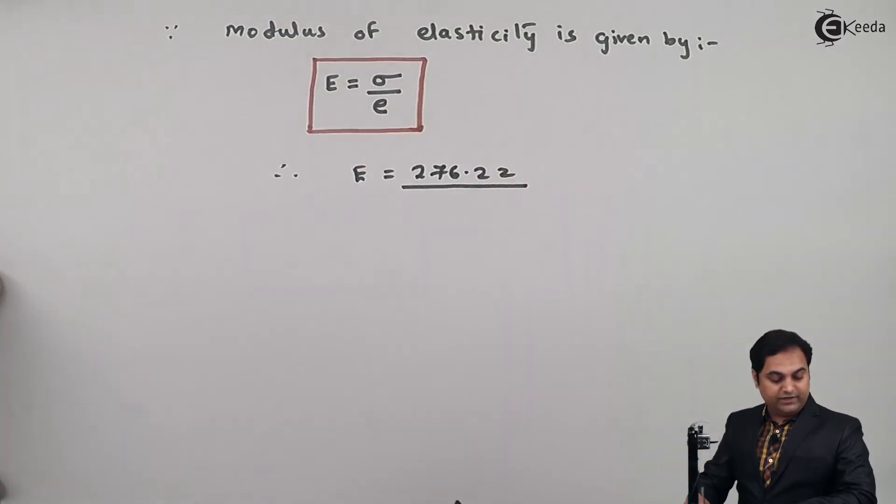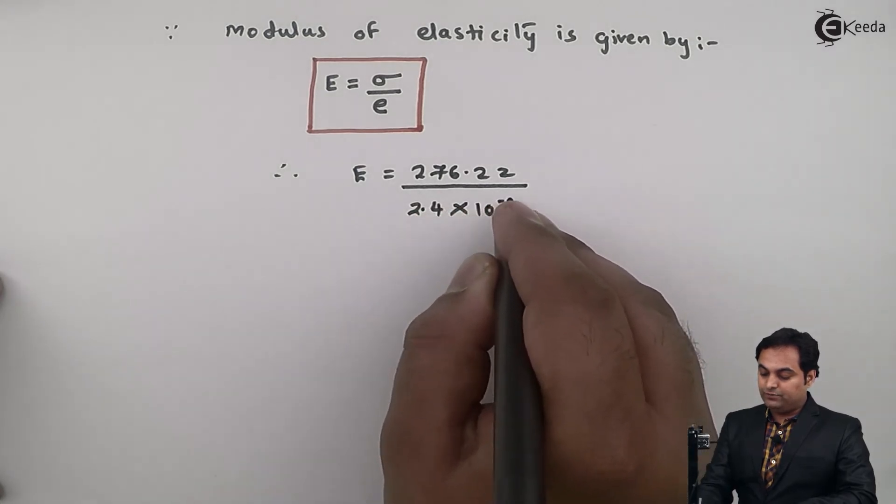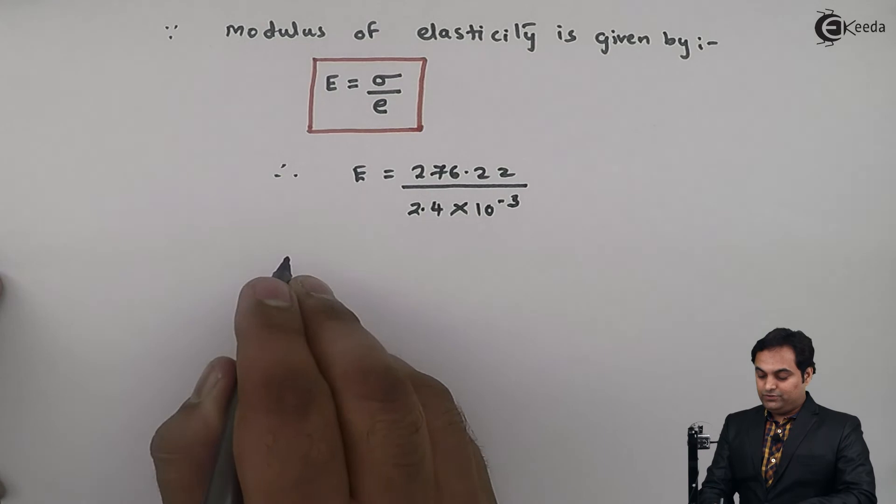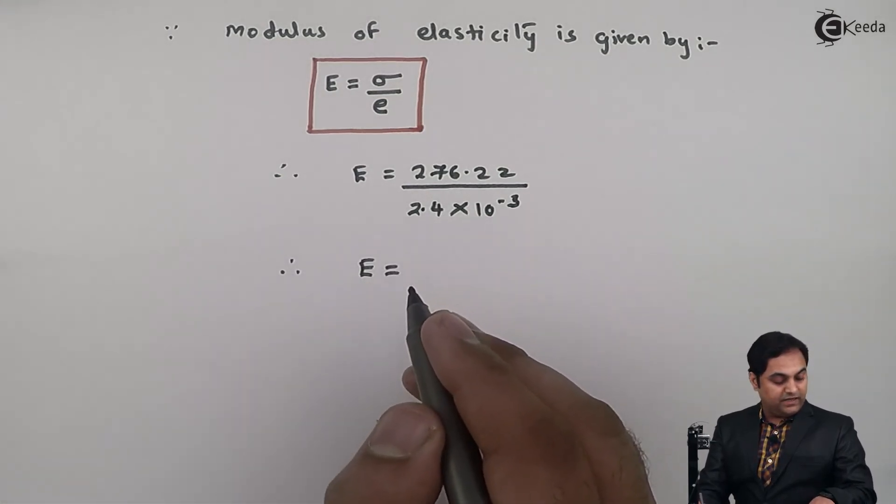Young's modulus is equal to stress is 276.22, our answer number one, strain 2.4 × 10⁻³. So from this I will get capital E, Young's modulus, my answer is...